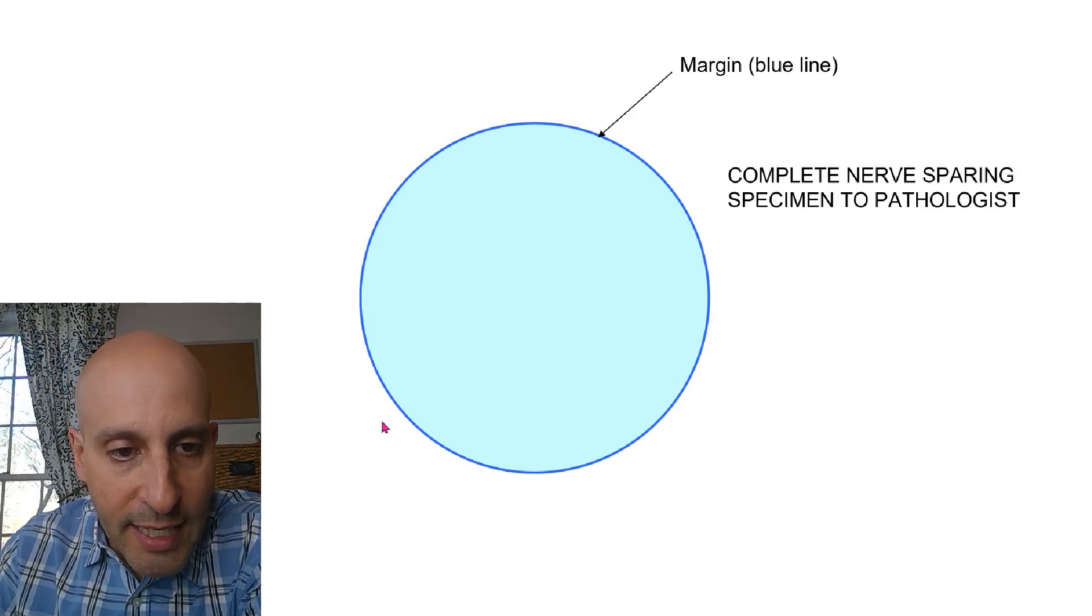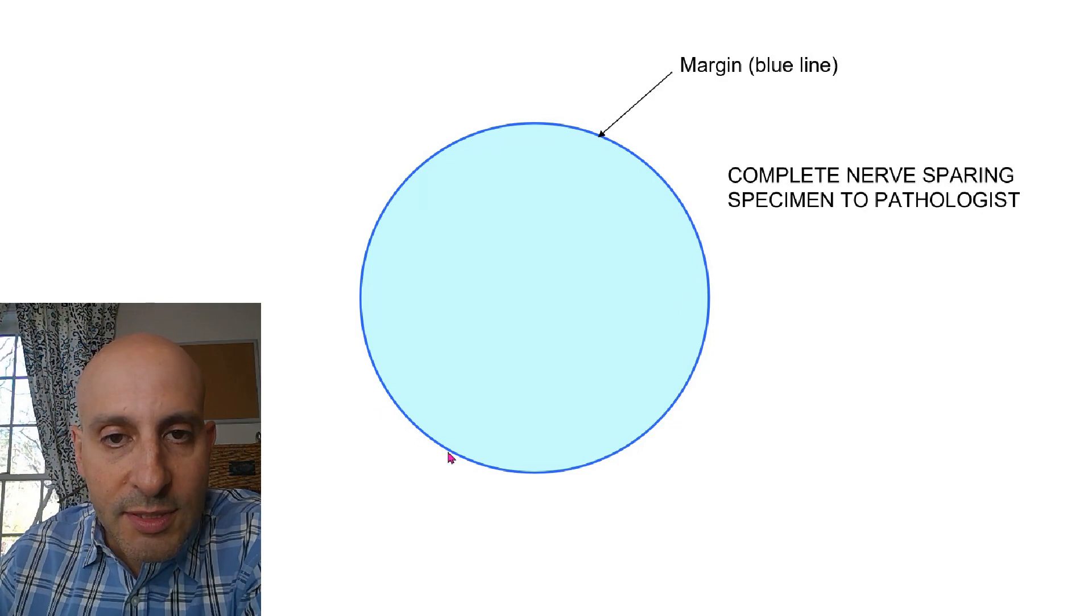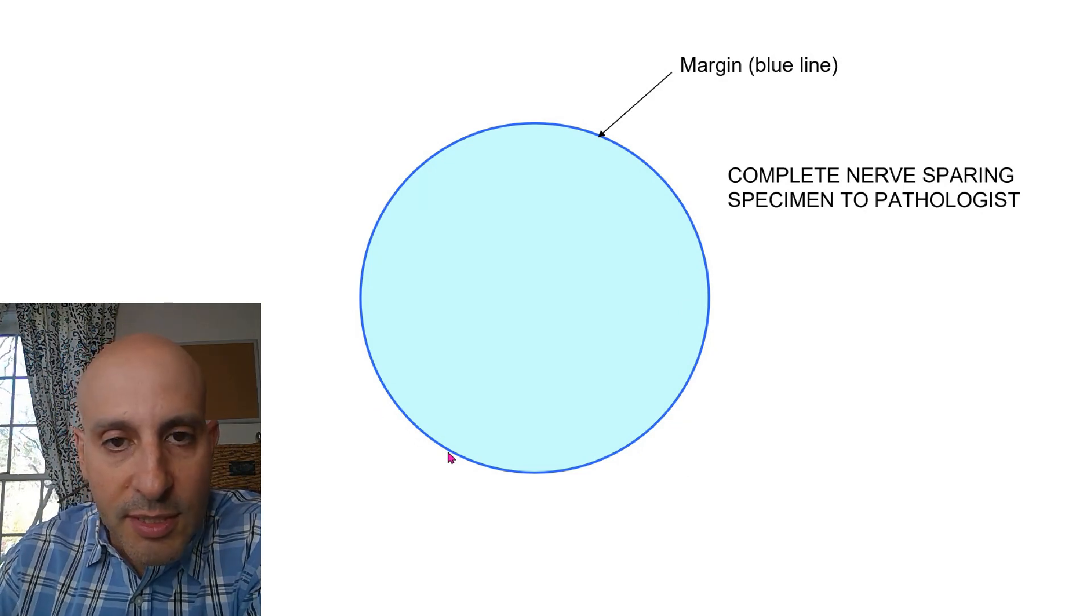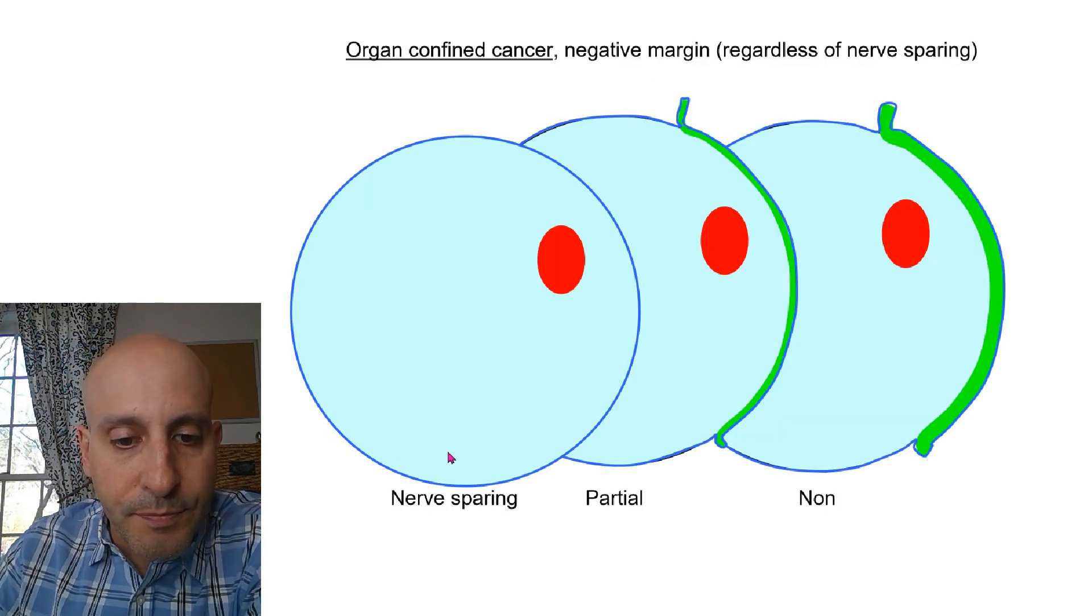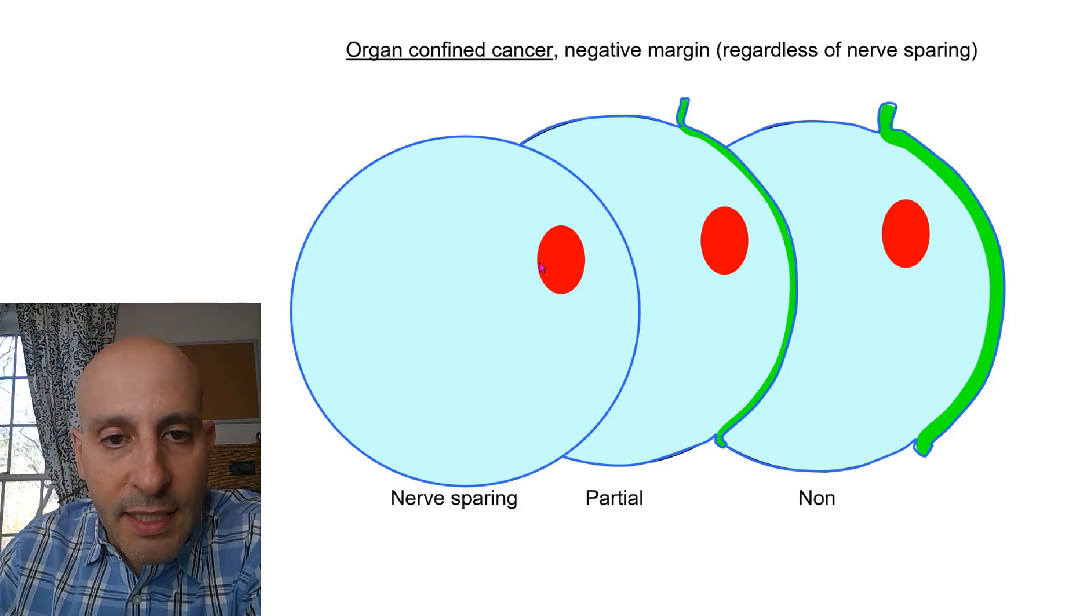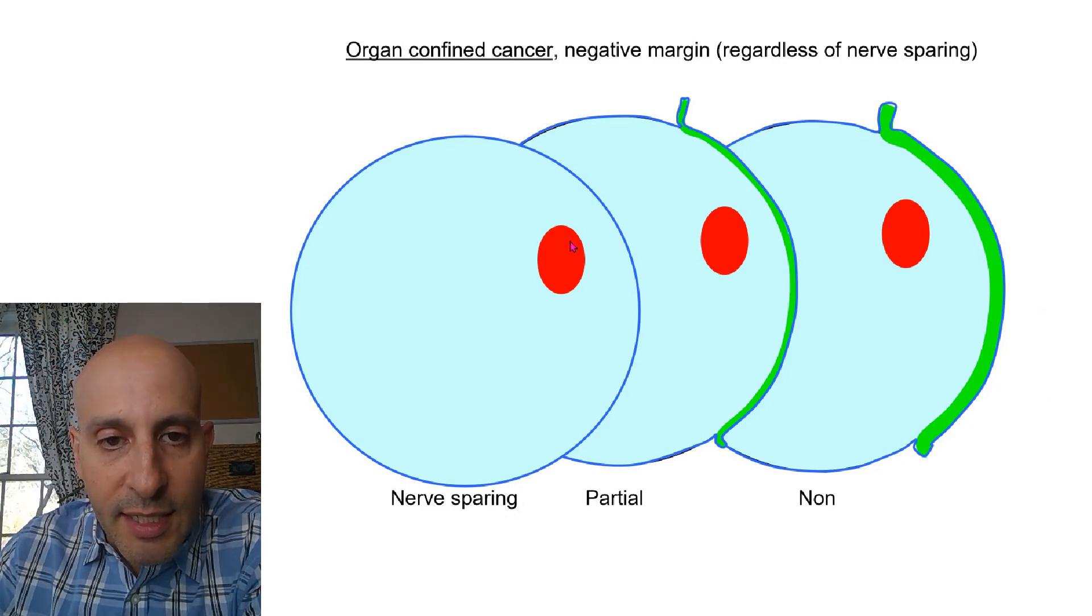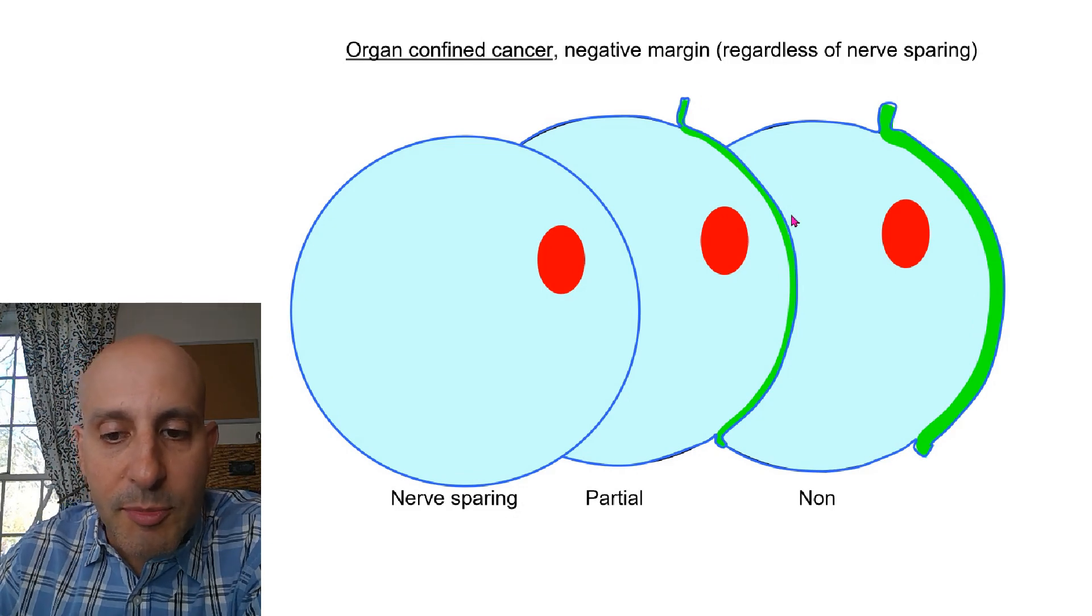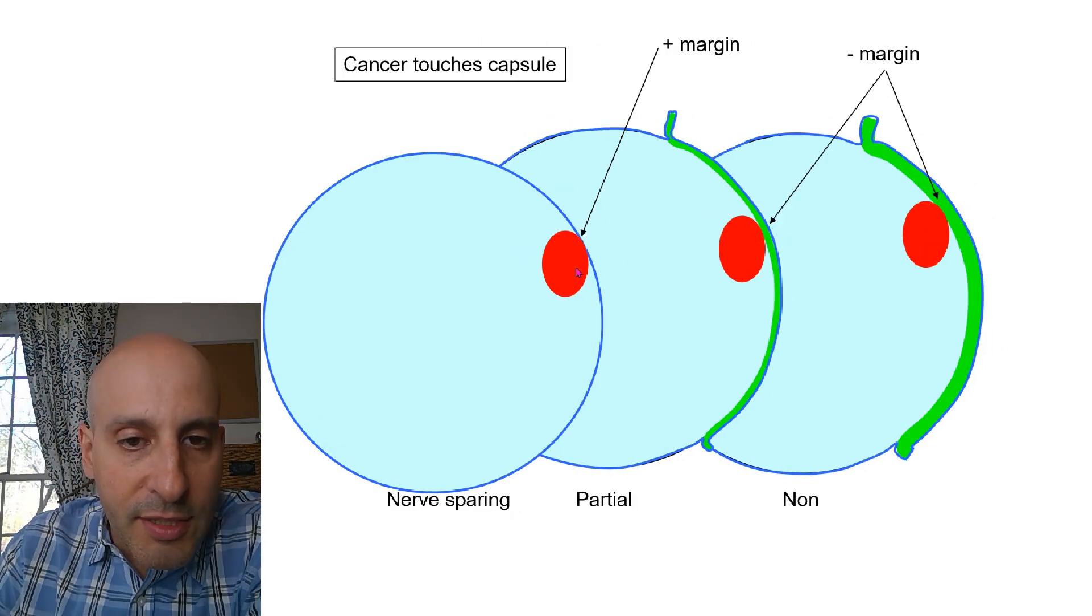Whatever the true edge of what was given to the pathologist is marked in blue. So if the cancer is contained, the margin will be negative, meaning cancer never touches blue, no matter what the surgeon did for nerve sparing, right? Because the cancer in this patient is so far to the interior, there's no way the margin could be positive.